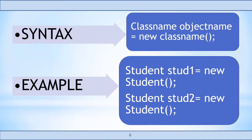Let us see the syntax of the object: class name, object name equal to new class name. For example, student is the class we have created before and stud1 is the object name and we are going to create space in the memory. And we are going to create another object by name student2, again creating another space in the memory for the student2 object.